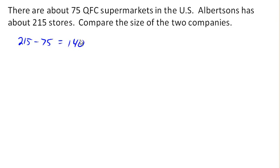If you were to write a paper and say Albertsons has 140 more stores than QFC, that doesn't really mean much by itself. Because 140 out of 75 is a pretty big difference, but if it was 140 out of 2,000, that wouldn't be such a big difference. That's why a relative change is usually more useful.